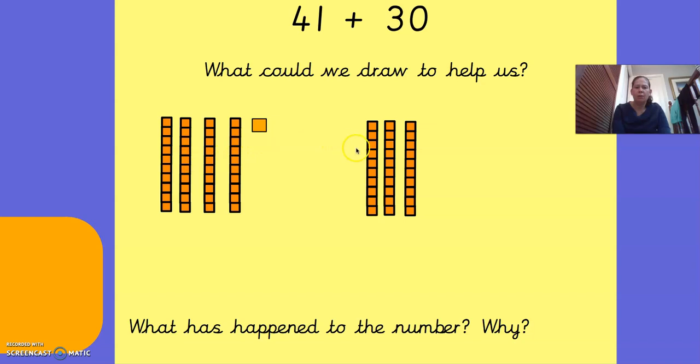So 41 plus 30, we've got 41, 51, 61, 71. So the answer would be 71. Well done if you've got that right.